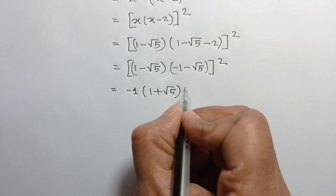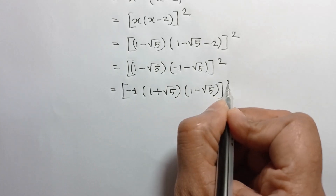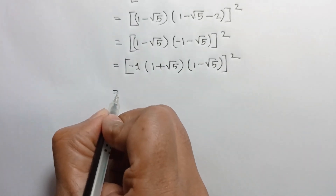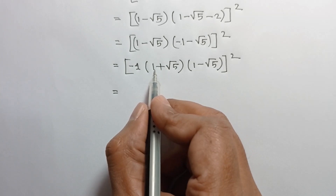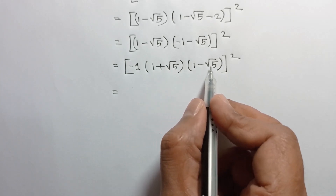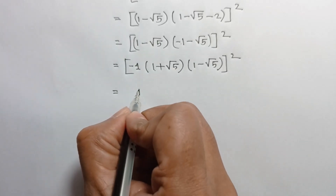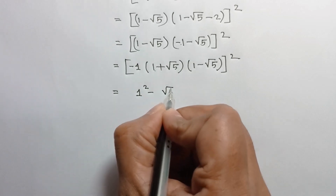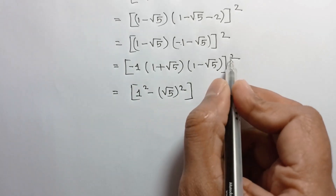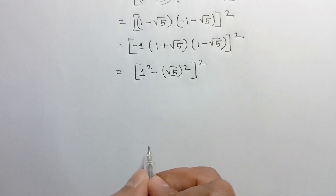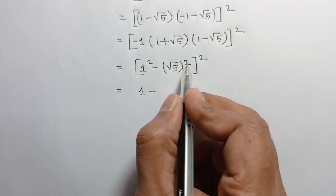Taking common negative 1 from here we can write negative 1 times 1 plus square root of 5, and this 1 minus square root of 5 whole squared. Negative 1 whole squared is positive 1. Now we have 1 plus square root of 5 times 1 minus square root of 5, which by the formula a plus b times a minus b equals a squared minus b squared, gives us 1 squared minus square root of 5 whole squared.